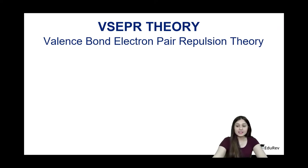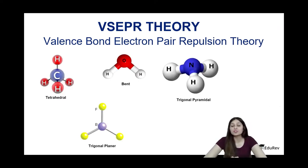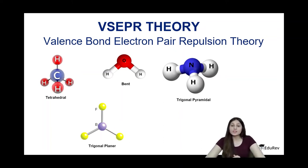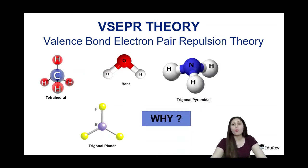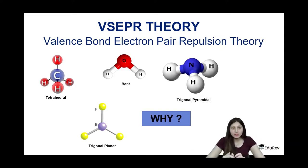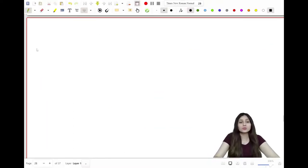The octet rule also cannot explain why molecules occupy only certain unique shapes in space. For example, methane is always tetrahedral, water is always bent, ammonia is always trigonal pyramidal, and BF₃ is always trigonal planar. The question of why these shapes exist is answered by the VSEPR model, which also helps us predict the shapes of molecules.